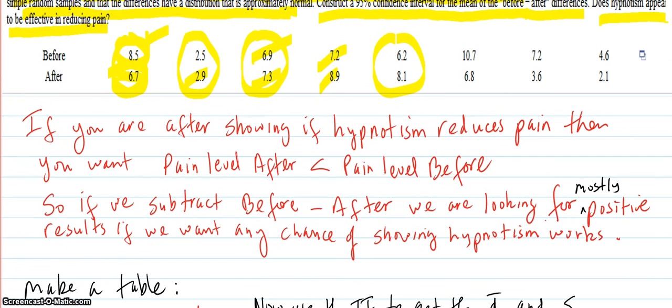So if you're after showing if hypnotism reduces pain, then you want the pain level after to be less than the pain level before. So if we subtract before minus after, we're looking for mostly positive results if we want any chance of showing hypnotism works.